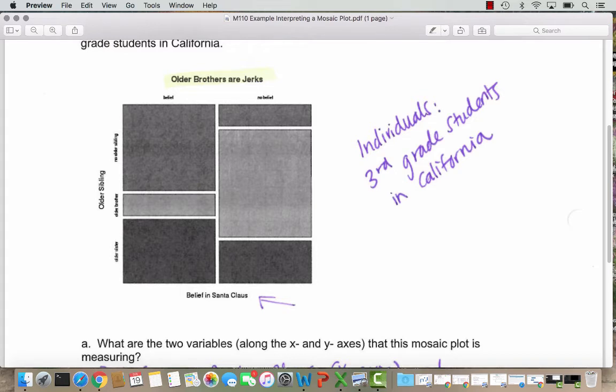The older brothers is the center of the y-axis sibling variable choices. For the students who believe in Santa Claus, a very small amount of them have older brothers. For the students that have no belief in Santa Claus, a very large amount of them have older brothers.